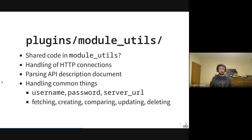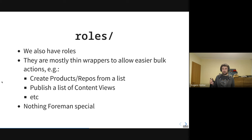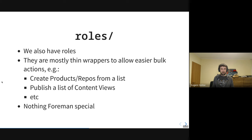The roles are mostly thin wrappers designed to allow bulk actions. At some point we realized that people don't want to create one product — they want to create 20. For them, it's easier to have a variable called 'foreman_products' listing all those products and call a role, which does the looping internally, versus writing a playbook with a loop themselves. There's no Foreman-specific code beyond using the Foreman modules to talk to the API.